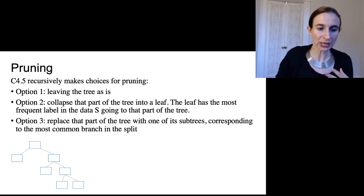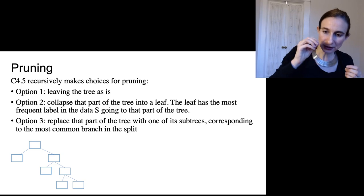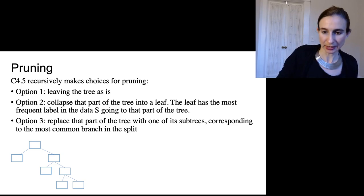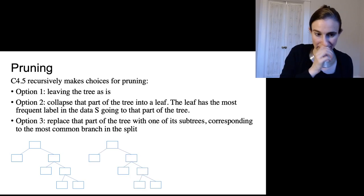The second option is to collapse part of the tree into a leaf. And the leaf that has the most frequent label in the data, the leaf that you're creating, it has the most frequent label in the data going to that part of the tree. So let me just show you what that is.